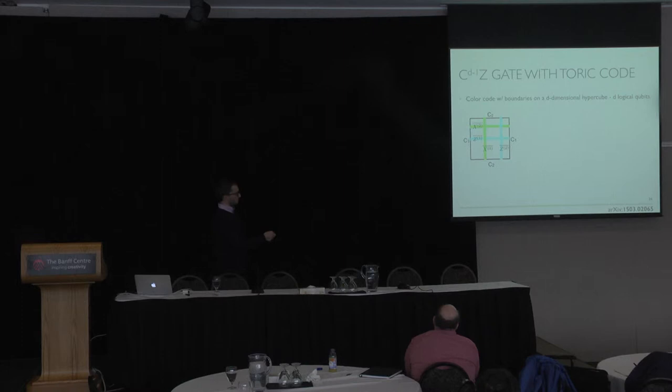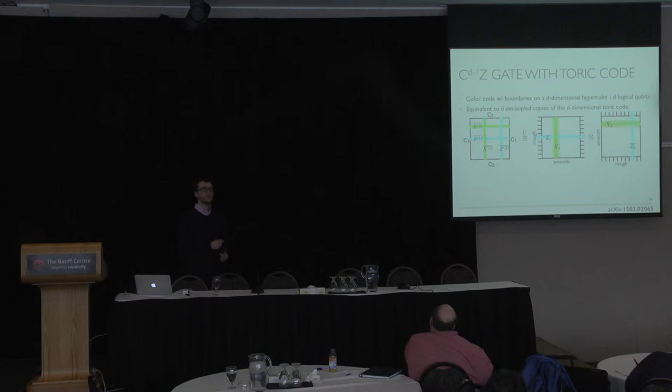Such a code would have d logical qubits. As an example, let's consider the color code on the square patch with boundaries of two colors. Such a color code would have two logical qubits. And it turns out that this square color code with boundaries is equivalent to two copies of the toric code with boundaries, each of which has exactly one logical qubit.